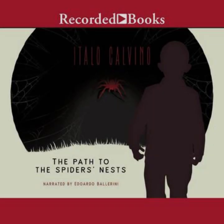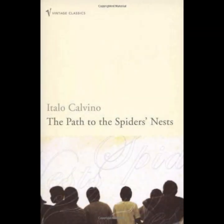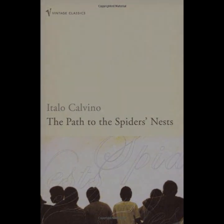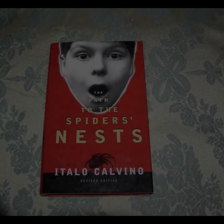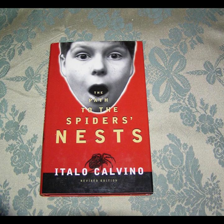Calvino's prose is both lyrical and stark, capturing the nuances of Pin's internal struggles and the external chaos of the war. The novel's structure reflects the fragmented and often chaotic nature of Pin's experiences, with shifts between moments of introspection and action that mirror the unpredictability of the war itself. In The Path to the Spider's Nests, Calvino offers a poignant exploration of the impact of war on a young mind, using Pin's personal journey to reflect on broader themes of innocence, identity, and survival.